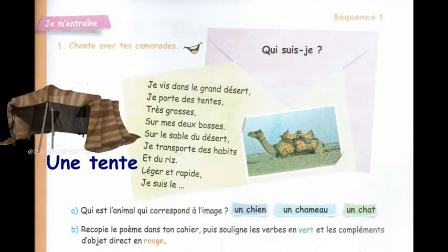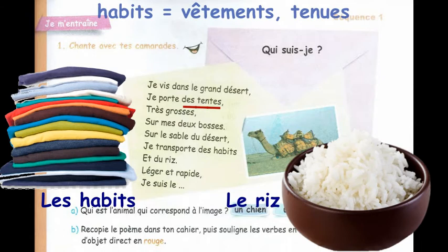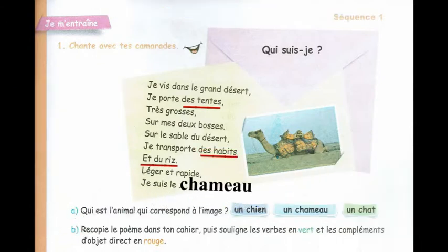Détente est le complément d'objet direct. Je transporte des habits et du riz. Le sujet est « je », le verbe « transporte ». Je pose la question : Je transporte quoi ? Je transporte des habits et du riz. Des habits, du riz : COD. Je suis le chameau. Je suis qui ? Je suis le chameau. Le chameau : COD.